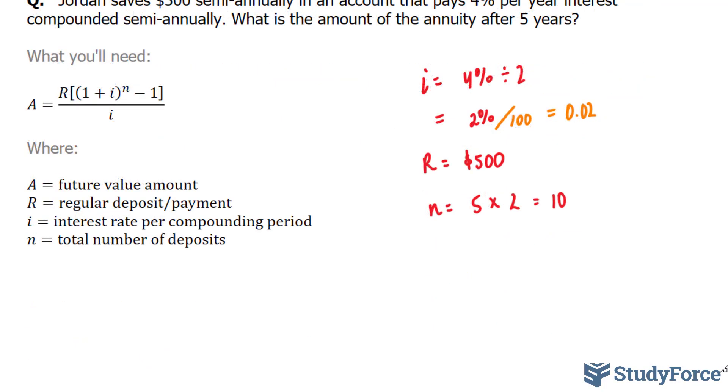Now we have every bit of information we need to plug in into our formula to find the future value amount. Let's do this together. So A is equal to R, which is 500, square bracket, 1 plus 0.02 to the power of N, which is 10, minus 1. Close the square bracket, all over i, which is represented as 0.02.